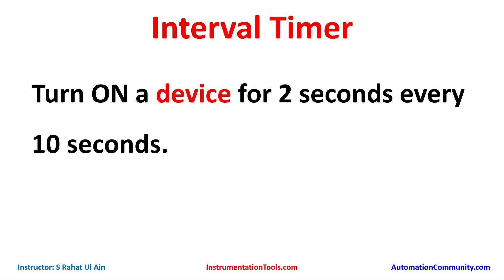The example is an interval timer: turn on a device for two seconds every 10 seconds. We will use a switch to turn on a device. The device will remain on for two seconds, then turn off and remain off for 10 seconds, then turn on again for two seconds, and repeat this process again and again.